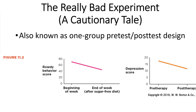For example, with the campers and their rowdy behavior score at the beginning versus the end of the week, we see a drop in behavior. You could run a paired samples t-test, since we're taking information from one group and looking at their before and after. If this is a statistically significant result, you could say there's a difference because of the lack of sugar — or the same with pre-therapy and post-therapy measures of depression scores. But of course, we need to start thinking critically about what else could be going on.